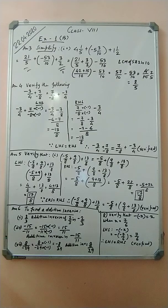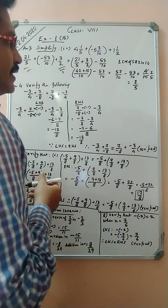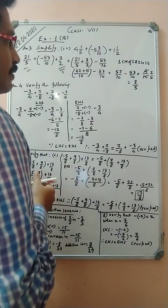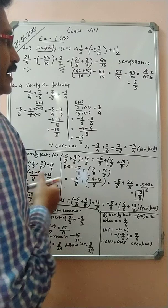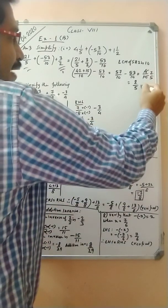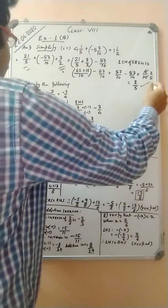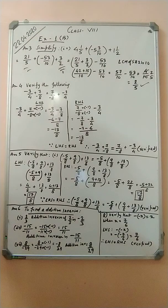So we have 42 plus 15 is 57, giving 57/10 minus 53/10. Then 57 minus 53 is 4, giving 4/10. Simplifying, 4/10 reduces to 2/5. So our answer is 2/5. Now let's move to Question Number 4.